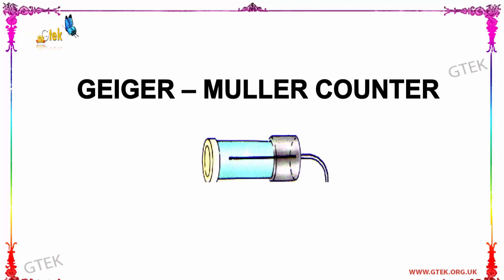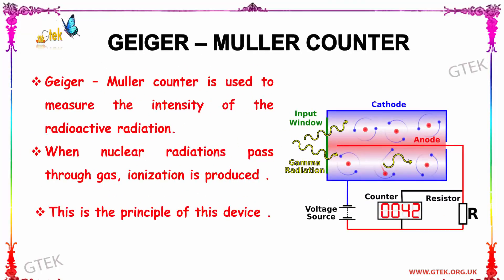Welcome to GTech. Today we are going to see about the Geiger-Müller counter. The Geiger-Müller counter is used to measure the intensity of radioactive radiation. When nuclear radiation passes through gas, ionization is produced. This is the principle of this device.